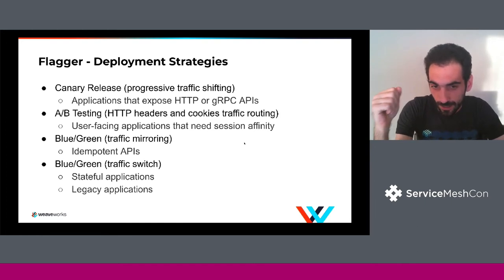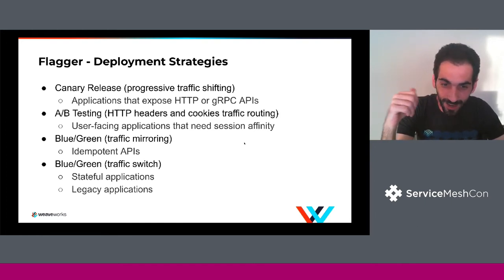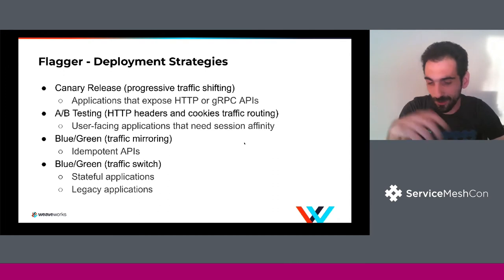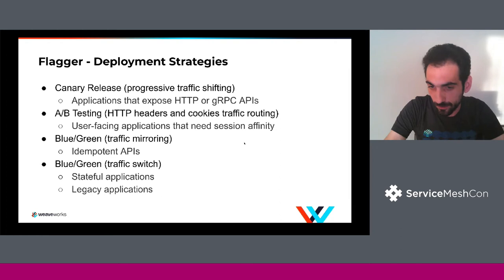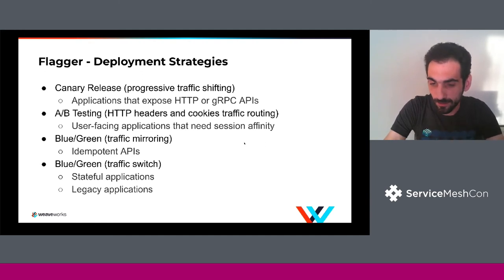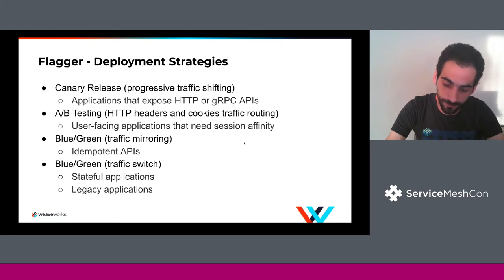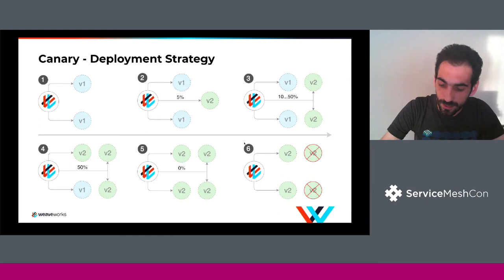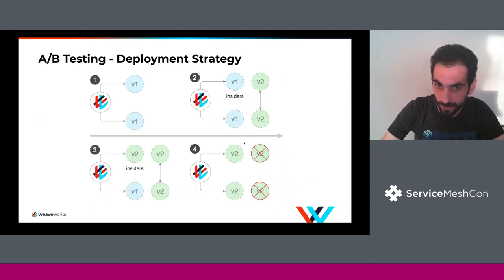Last is the classical blue-green deployment, where you duplicate everything and you can tell Flagger to run end-to-end tests or conformance tests. Based on those test results, Flagger will take the decision to promote or roll back the new version. Here are some diagrams representing these three strategies.